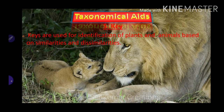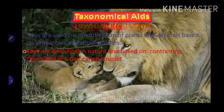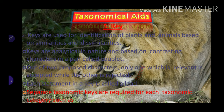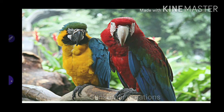Taxonomical aid number 5 is the key. Keys are used for identification of plants and animals based on similarities and dissimilarities. Keys are analytical in nature and based on contrasting characters in a pair called a couplet. Out of two proposed characters, only one which is relevant is accepted while the other is rejected. Each statement in a key is called a lead. Separate taxonomic keys are required for each taxonomic category such as family, genus, order, etc.